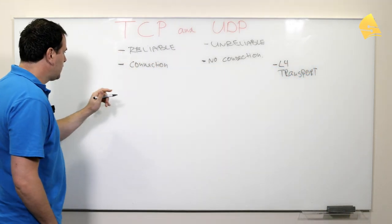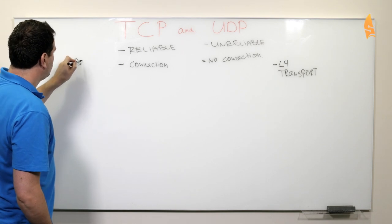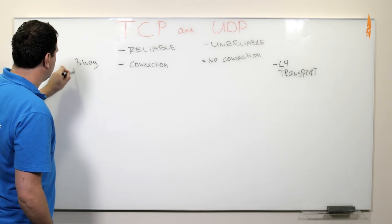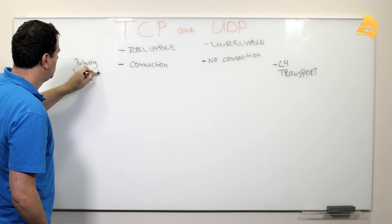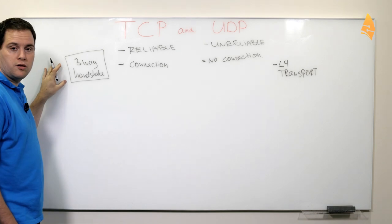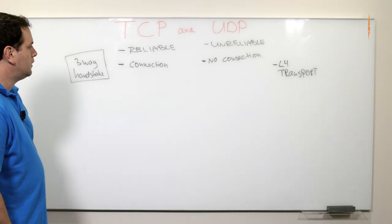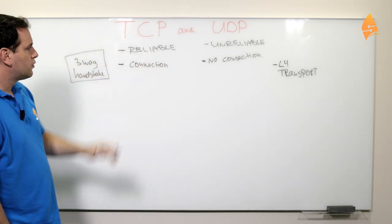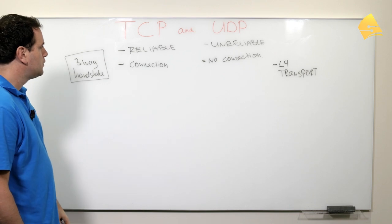TCP creates a connection. This is done by something called the three-way handshake. But I'll talk about this in another video. So it creates a connection, doesn't create a connection. What else do we have?